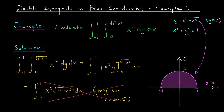Maybe now it's a bit more obvious that polar coordinates will be a good choice here. After all, this domain can be described very simply in polar coordinates. The domain consists of all points where phi is between 0 and pi — we're going all the way from the positive x-axis to the negative x-axis — and our radius rho extends from 0 all the way out to 1. So this domain is really a polar rectangle. Let's convert to polar coordinates and evaluate this double integral differently.